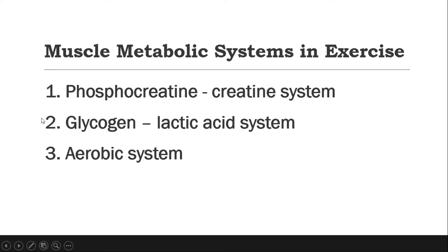As you can see, the first two systems are anaerobic, meaning they do not require oxygen. The third system is aerobic. The phosphocreatine-creatine system has a molecule called phosphocreatine which contains energy — when metabolized, it releases energy to supply muscle contraction. The second is the glycogen-lactic acid system: the body uses its glycogen stores and transforms them into lactic acid, which supplies the body in the absence of oxygen. The third, the aerobic system, requires oxygen.